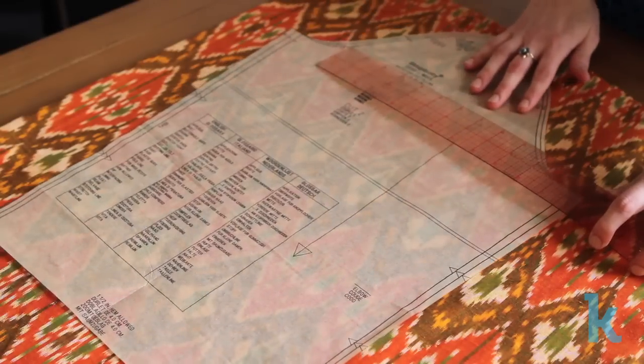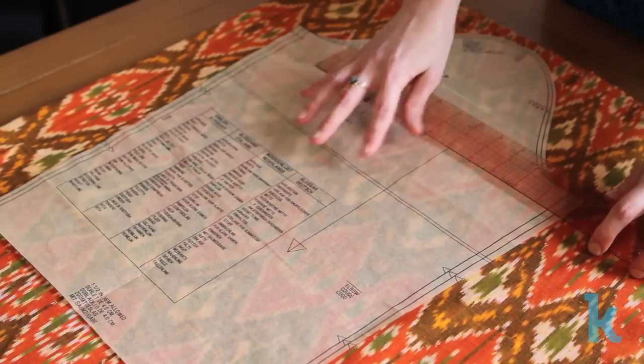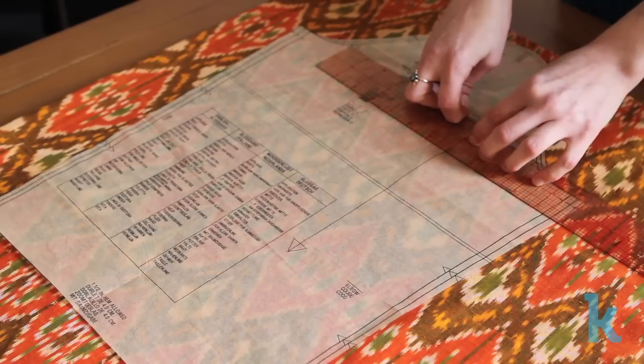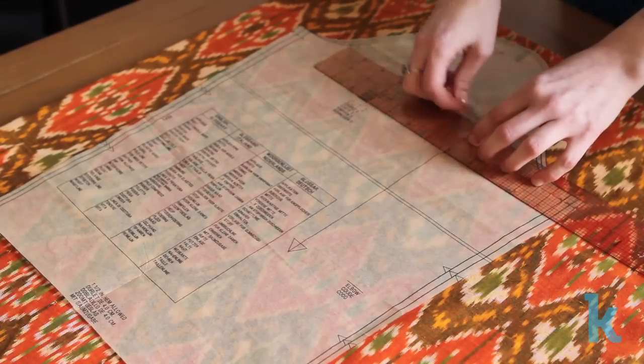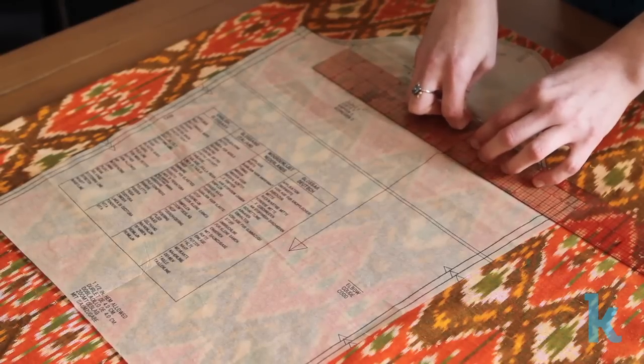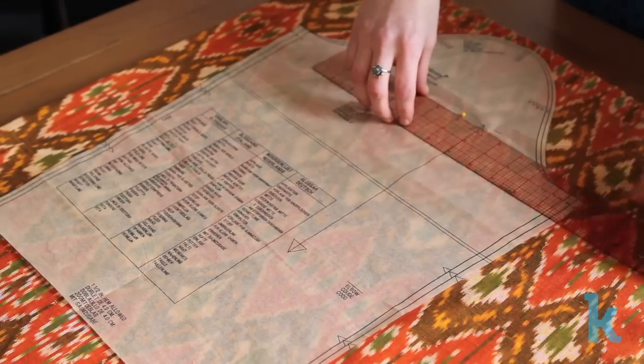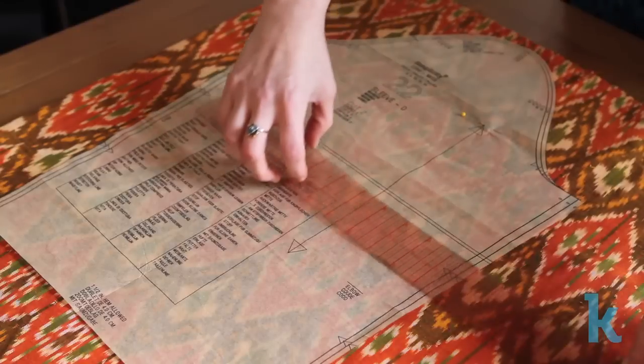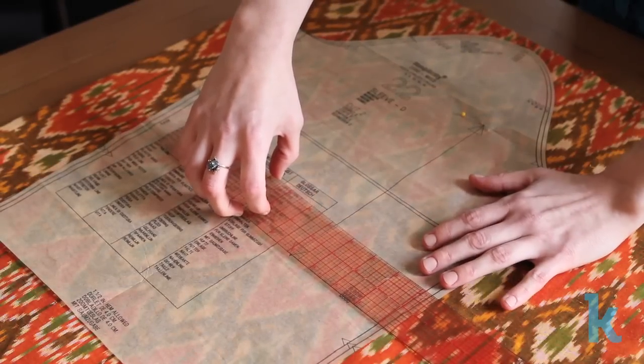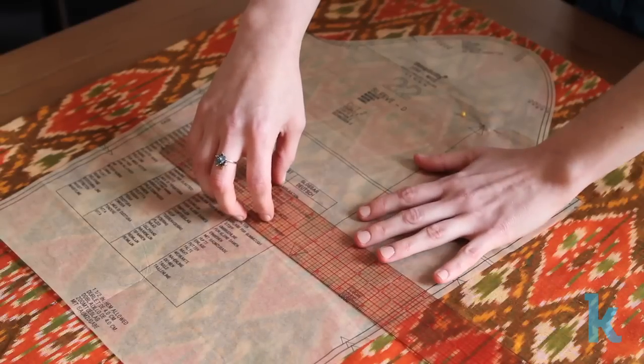To make sure your pattern piece's grainline is aligned with the fabric, you'll first need a ruler or tape measure. To do this, measure the distance between the fabric selvedge and the pattern's grainline at one end of the arrow. Make sure it's straight and pin it in place. Then, measure farther down the pattern's grainline and make sure it's the same distance away from the selvedge. Pin it in place and secure the grainline.